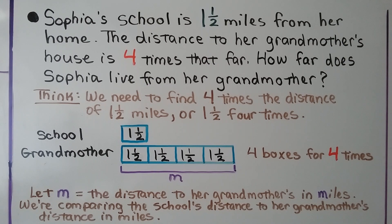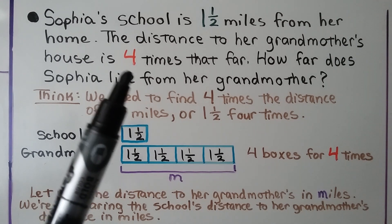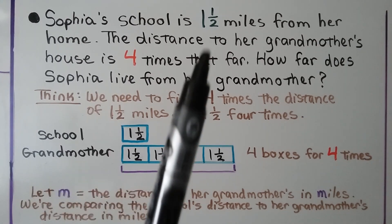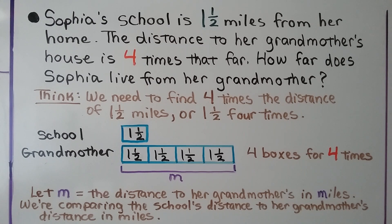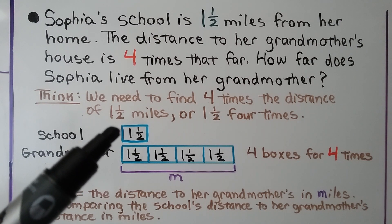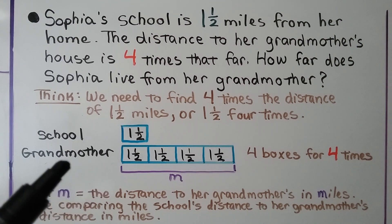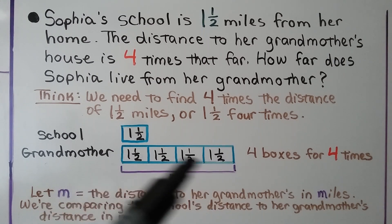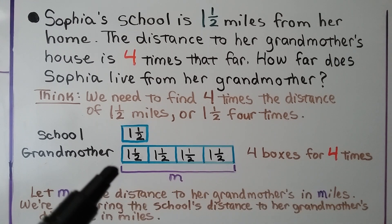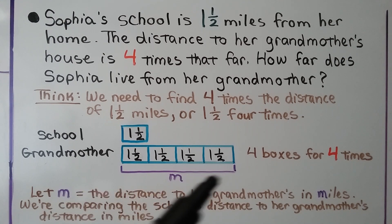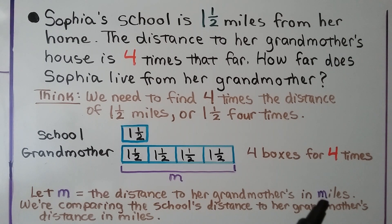Sophia's school is 1.5 miles from her home. The distance to her grandmother's house is 4 times that far. How far does Sophia live from her grandmother? We need to find 4 times the distance of 1.5 miles, or 1.5 four times. We use a bar model: the school is 1 box of 1.5, and grandmother's house is 4 times that, so we have 4 boxes. We're going to let m equal the distance to her grandmother's house in miles — miles starts with m.